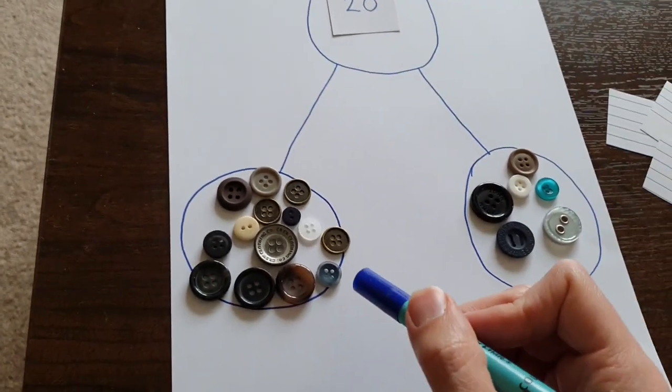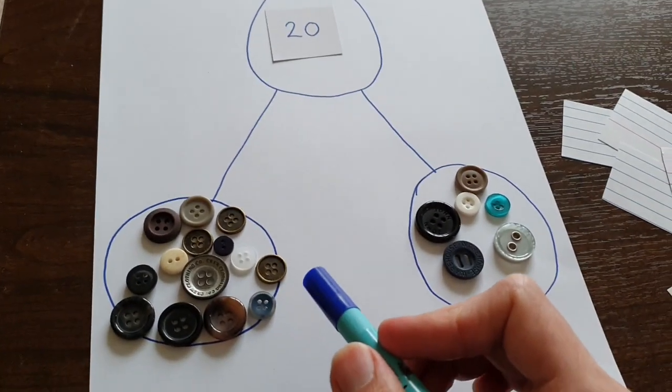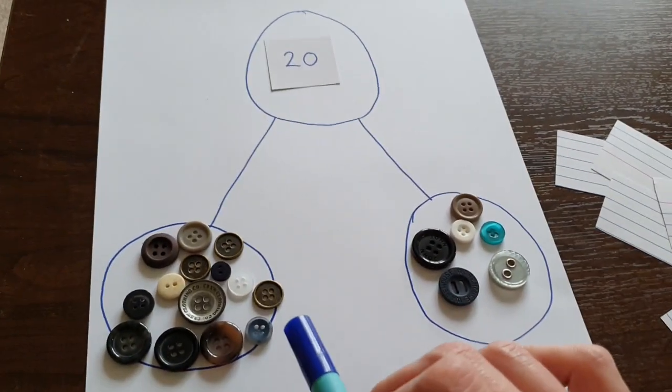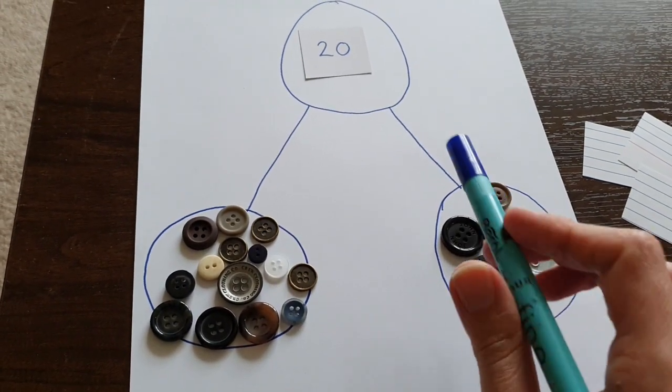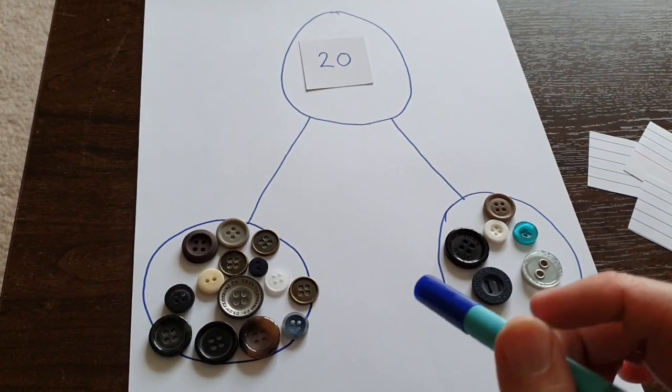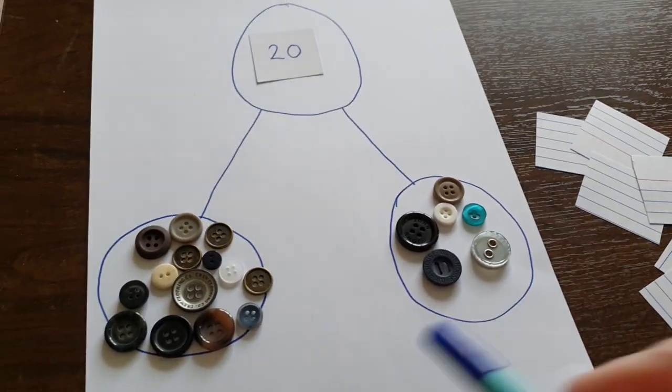Now, if you want to, you can write that next to your circles like you see on number of the day, if you've watched number of the day videos. But that means you can't reuse your part-part-whole. So instead, you might want to write them on a piece of paper to help you remember.